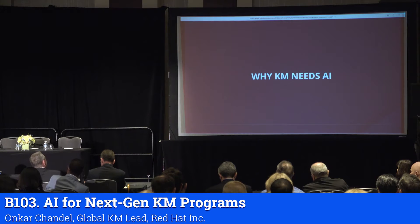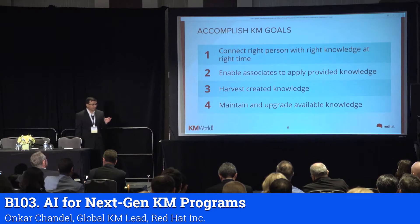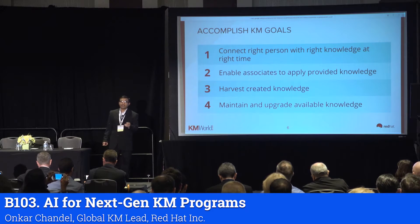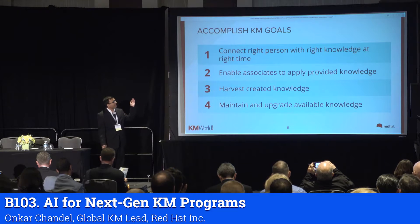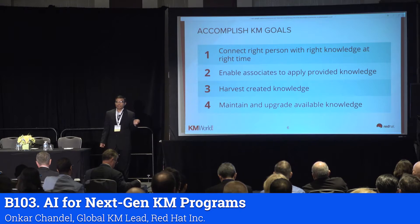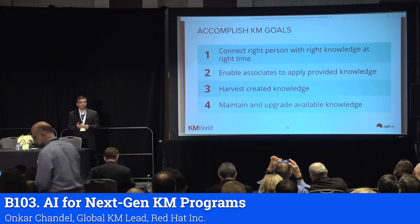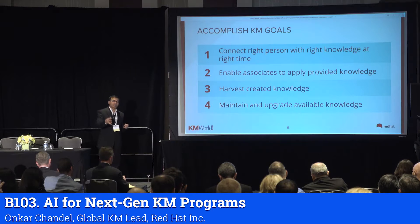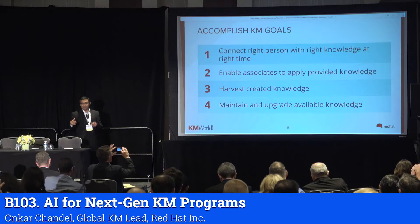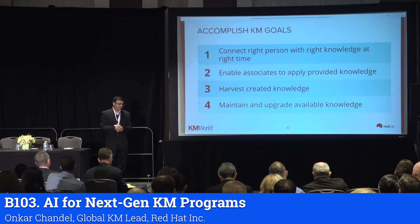So why does knowledge management need artificial intelligence? Currently we say: connect the right people to the right knowledge at the right time. But in the future, our organization is moving toward connecting the right person with the right knowledge before time — not even at the right time. Forecasting is one of the most important parts, because once your organization forecasts what will happen next quarter, you can enable people beforehand so they can deliver faster.